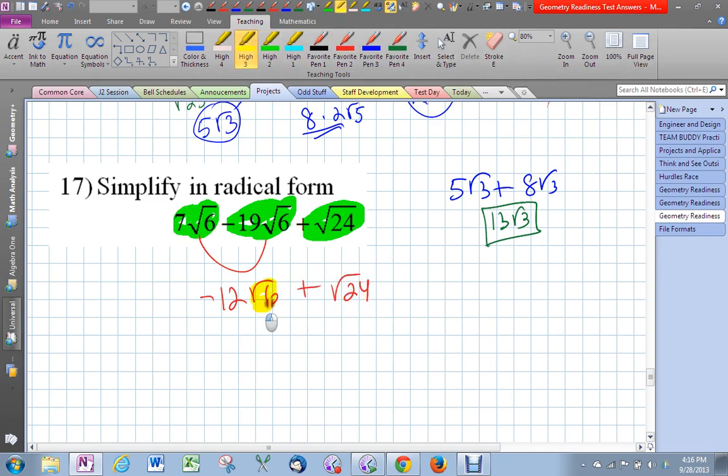Well, at a first glance, it looks like radical 6 and radical 24, they're not the same, but we can certainly simplify radical 24. That will be, we just did this I think a moment ago, this is radical 4 times radical 6, which is 2 radical 6.